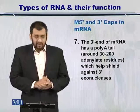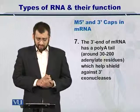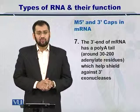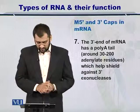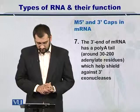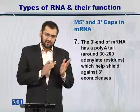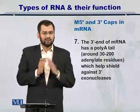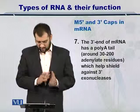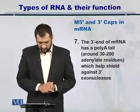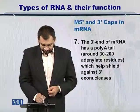The three prime end of the mRNA is also a poly-A tail made of adenylate residues. Just like the five prime end, it protects the three prime end from three prime exonucleases.